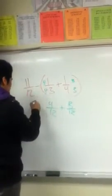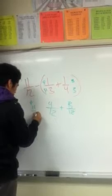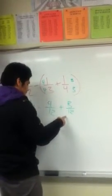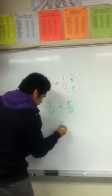Then you can bring this down. You add these. You don't add the denominator because they're the same. 7 over 12.